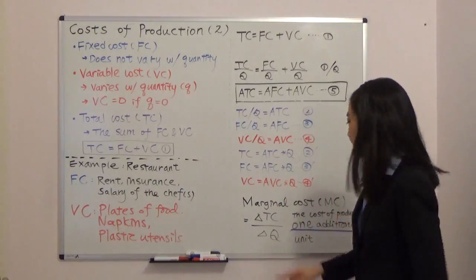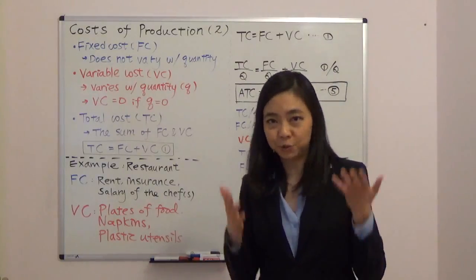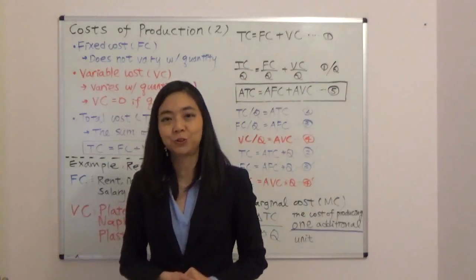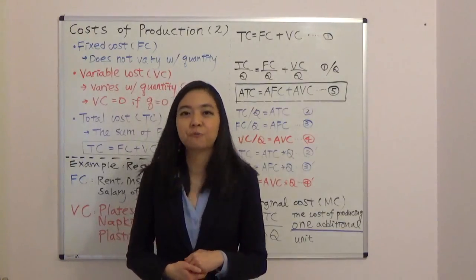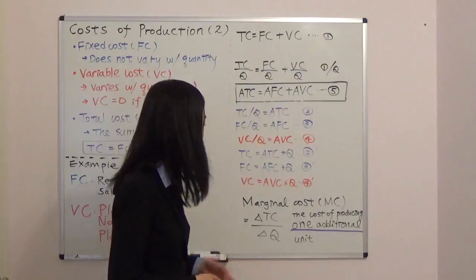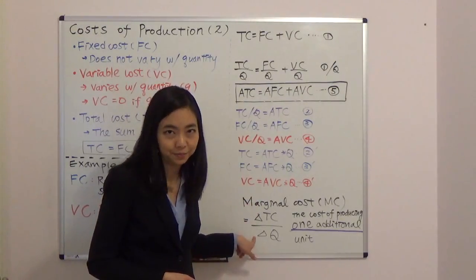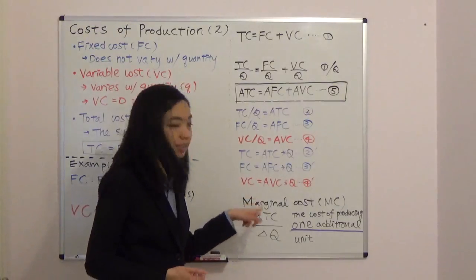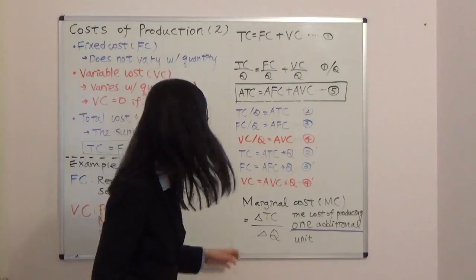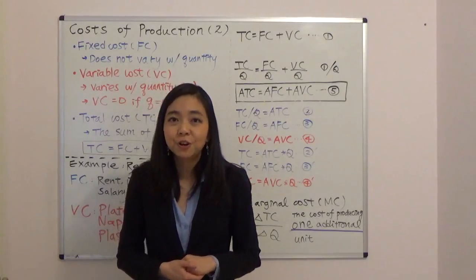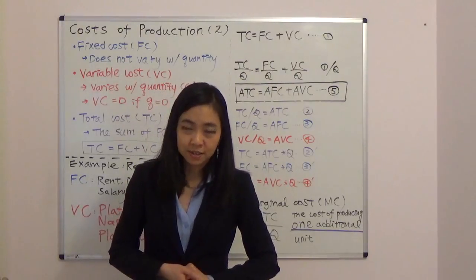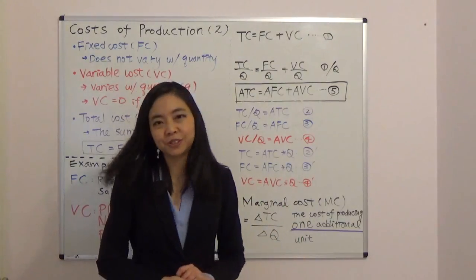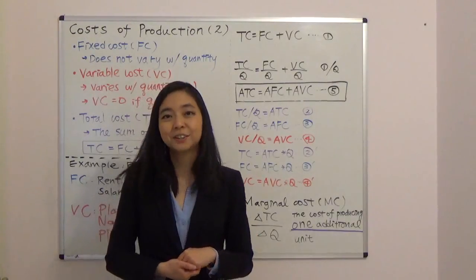The last thing that might be a little bit tricky is marginal cost. If you remember, the meaning of marginal is one additional. So marginal cost is the cost of producing one additional unit. Mathematically, it's the change in total cost divided by the change in quantity. If you know calculus, marginal cost is just taking the derivative of total cost with respect to quantity. And if you haven't taken calculus, don't worry — just remember that marginal cost is the cost of producing one additional unit, or mathematically, change in total cost divided by change in quantity.